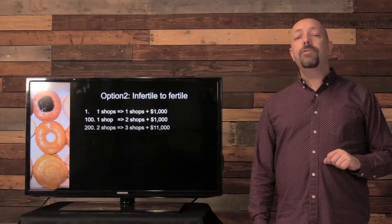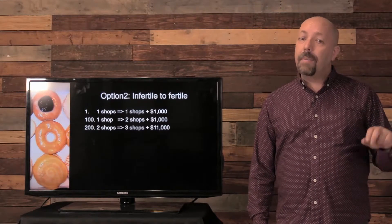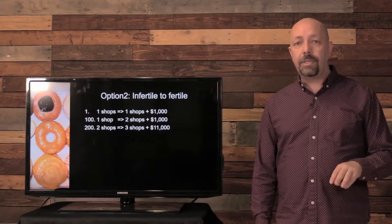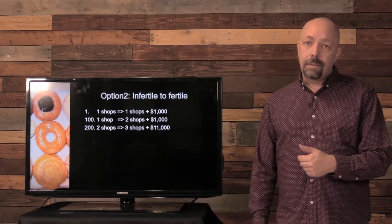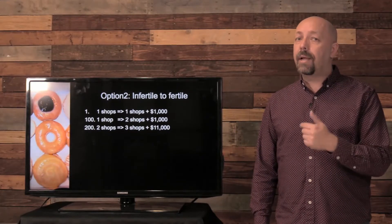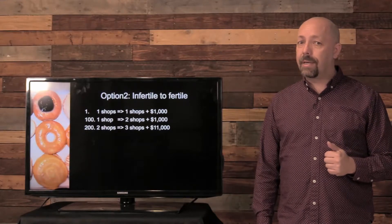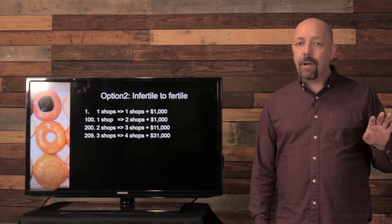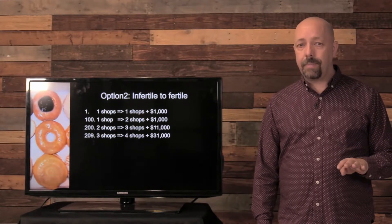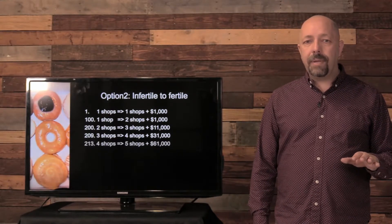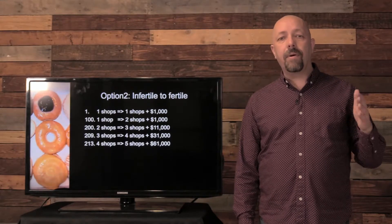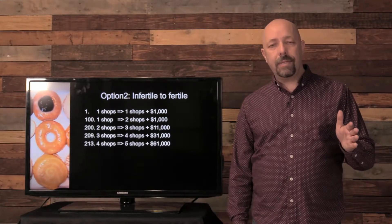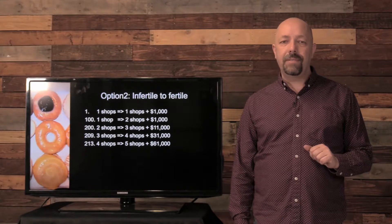At the end of year 200 I'm going to go from two shops to three shops, and that last store is actually generating $10,000 of profit every year. By year 209 I'm going to go from three shops to four shops. And ultimately in year 213 I'm going to go from four shops to five shops.